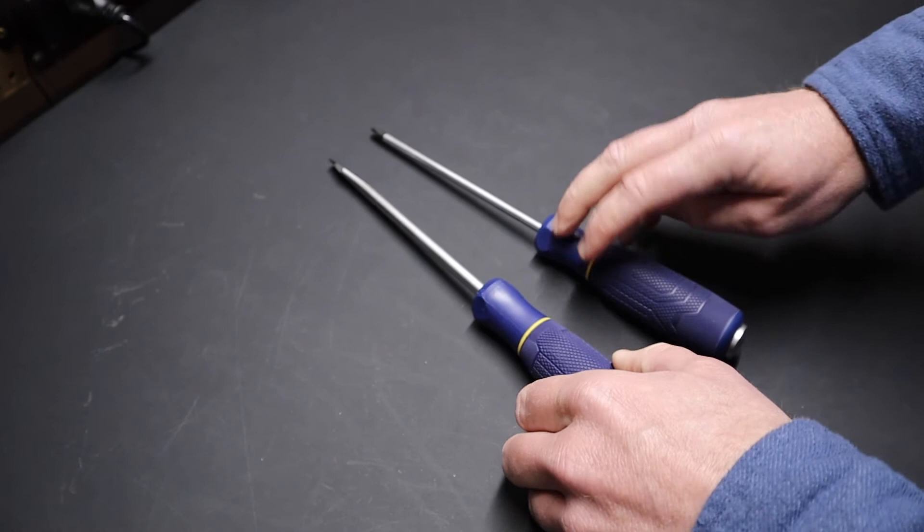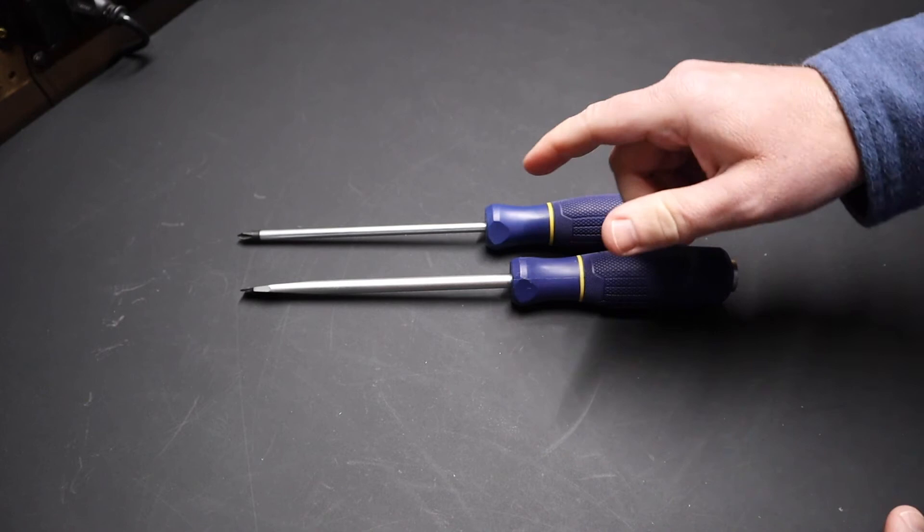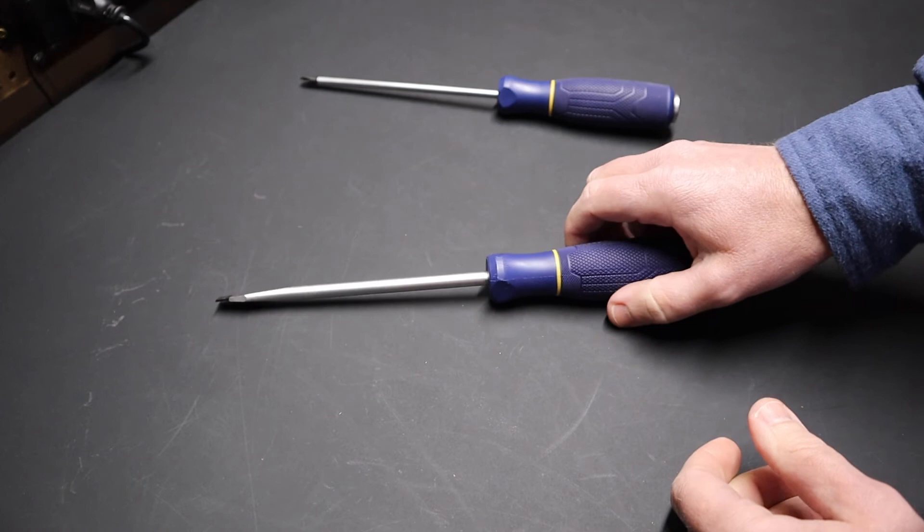The DeWalts did not have that, the Kleins didn't have that, and like I said, the Milwaukee did. But I really did like the Klein screwdrivers. I actually bought the Klein screwdriver with a 7-inch shank and just ran into an issue where it wouldn't fit into the tool bag—was a little bit too long.